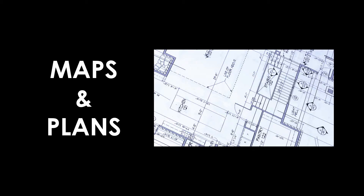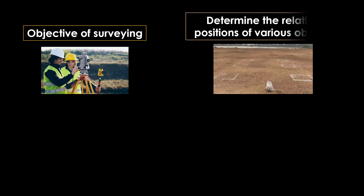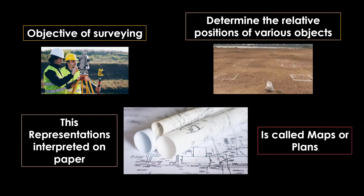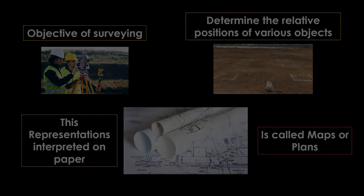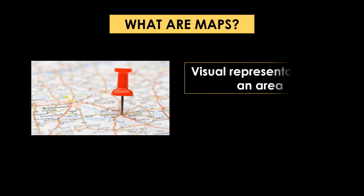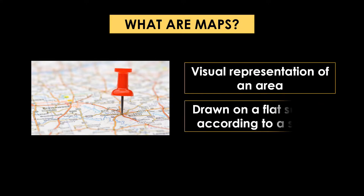Maps and plans play a major role in surveying and civil construction. The main objective of surveying is to determine the relative positions of various objects. Such representations interpreted on paper are called a plan or a map. A map is a visual representation of an area drawn on a flat surface according to a scale.